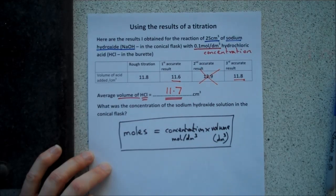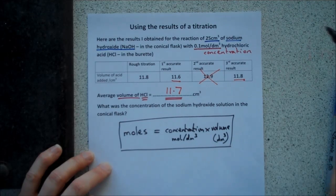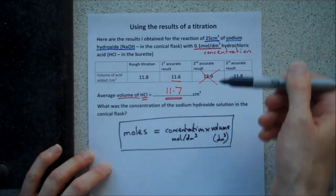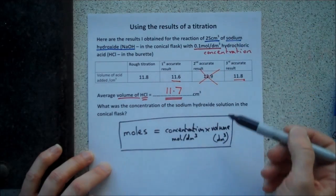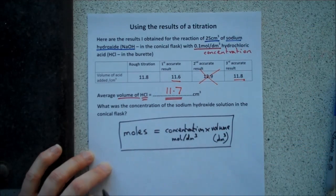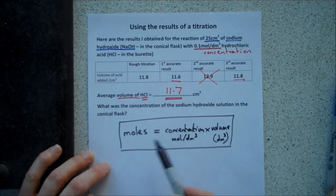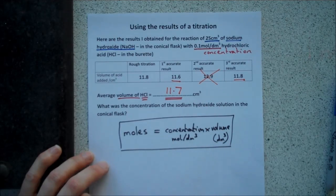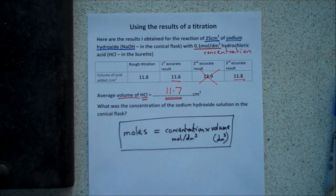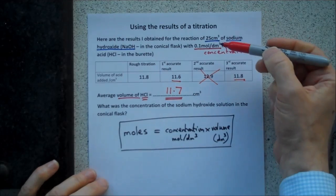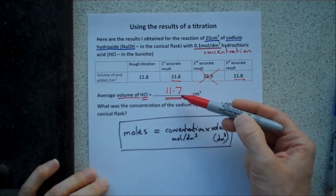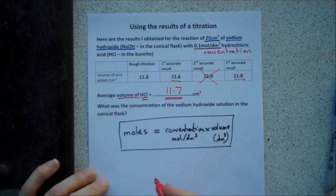So, if we look at our sodium hydroxide, we know the volume, 25. But it doesn't tell us the concentration, and it doesn't tell us the moles. So, we can't work anything out for sodium hydroxide. But with our hydrochloric acid, we are told the concentration, and we measured the volume.